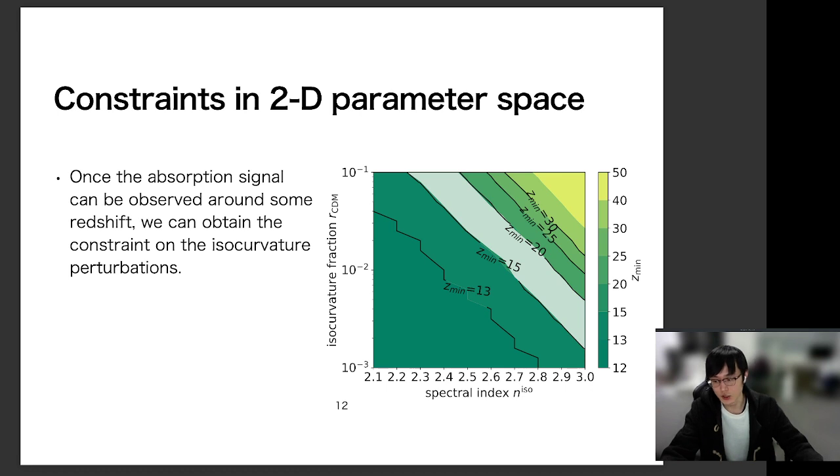Then this is the final result of our work. So the X-axis is the spectral index, and the Y-axis is the isocurvature fraction. When the global absorption signal is observed at some redshift, we can put the constraint on the isocurvature, like this two-dimensional parameter space, like this black solid line.